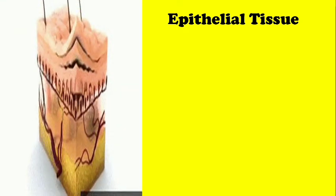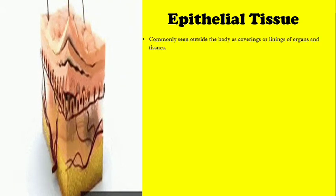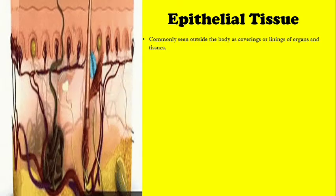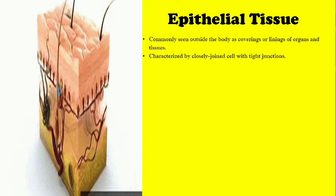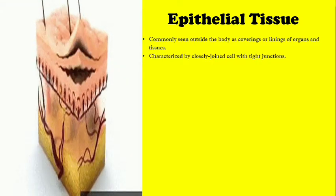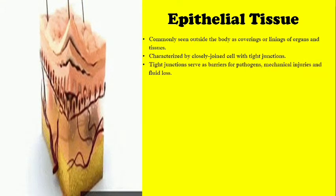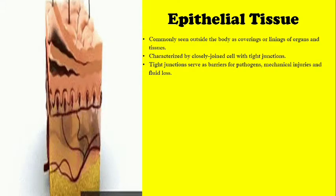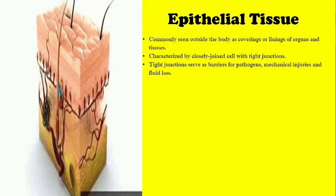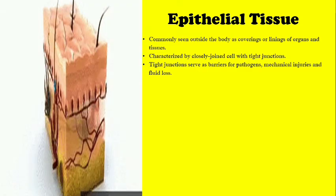Epithelial tissue is commonly seen outside the body as coverings or as linings of organs and cavities. Epithelial tissues are characterized by closely joined cells with tight junctions. Being tightly packed, tight junctions serve as barriers for pathogens, mechanical injuries, and fluid loss.